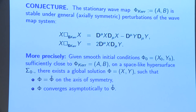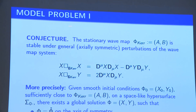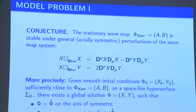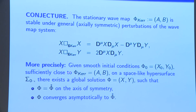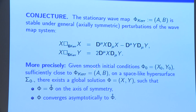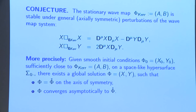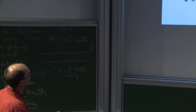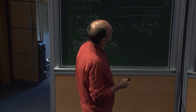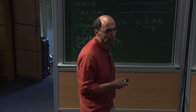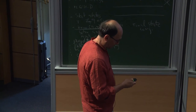Conjecture number one: the stationary wave map is stable under general axially symmetric perturbations. Given small initial data close to the Ernst potential of Kerr, there exists a global solution converging back to the Ernst potential. We have made a lot of progress on this; we proved all the important linear stability results with Ionescu. The conjecture is certainly consistent at the linear level, and my student John Stogin is doing the full nonlinear result.